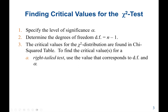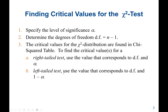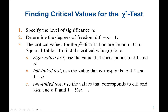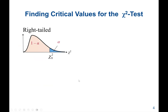We have three different types of tests. For a right tail test, we use the value corresponding to the degree of freedom and alpha. For a left tail test, we use the value corresponding to the degree of freedom and one minus alpha. For a two-tail test, we use the values corresponding to the degree of freedom and half times alpha, and also the degree of freedom and one minus half times alpha.